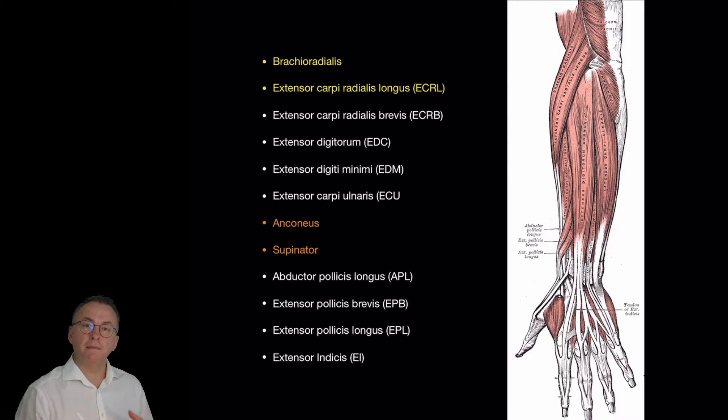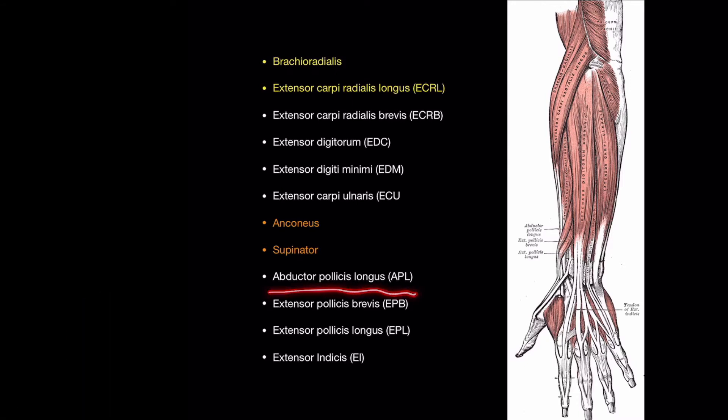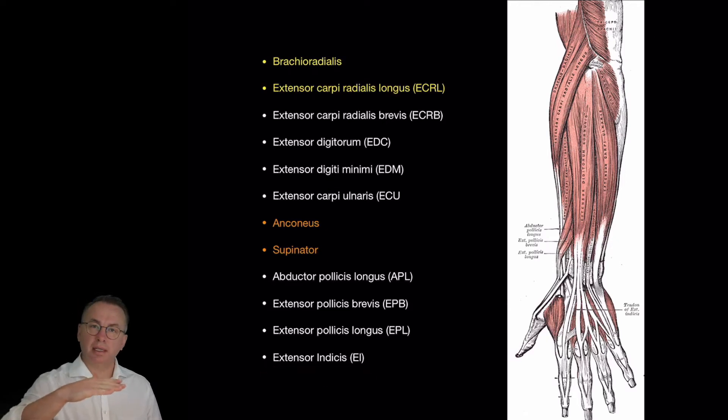Deep to those we have mostly the extensors of the thumb. The abductor pollicis longus, extensor pollicis brevis and extensor pollicis longus. In anatomy, when we hear pollicis, we know we're talking about the thumb. The other muscle is the extensor indicis or the index finger extensor. So they're the 12 muscles of the posterior or extensor compartment of the forearm.